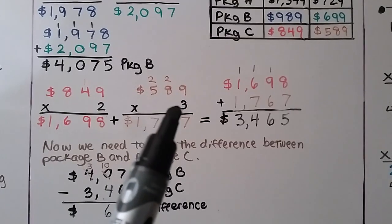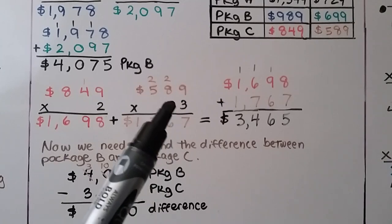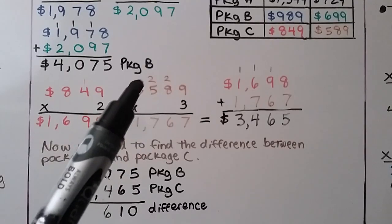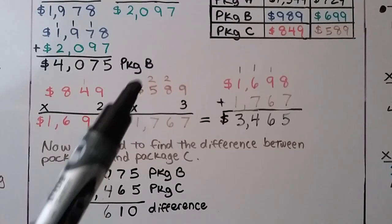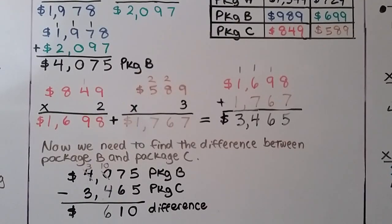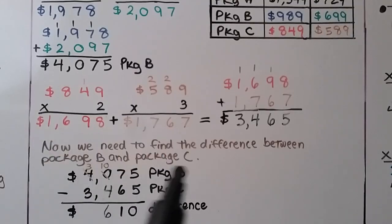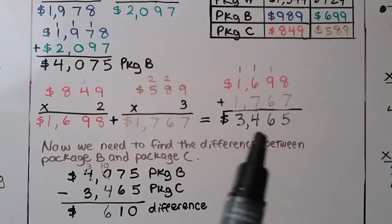For the children: $589 times 3. We do 3 times 9, which is 27 — regroup the 2, put the 7 down. 3 times 8 is 24, plus 2 more is 26 — regroup the 2, put the 6 down. 3 times 5 is 15, plus 2 more is 17. For the children we have $1,767. Adding $1,698 and $1,767, we get $3,465.